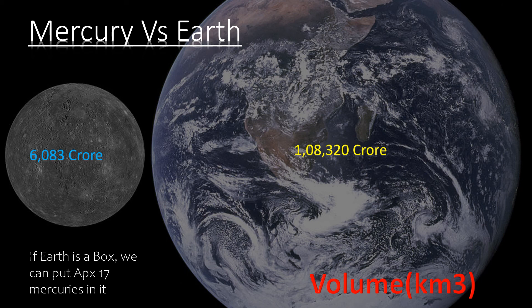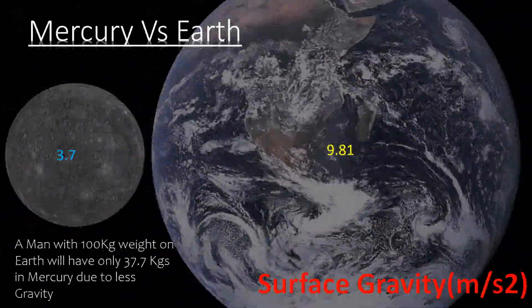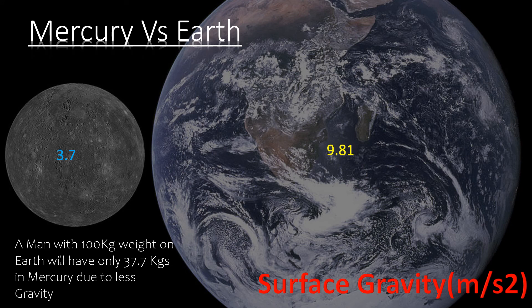When comparing by volume, if the Earth were a box, we could fit approximately 17 Mercuries in it. In terms of mass, Mercury's mass is about 6,083 crores and Earth's is as high as 1 lakh 8,320 crores. A man with 100 kilograms weight on Earth will have only 37.7 kilograms on Mercury due to less gravity on that planet.